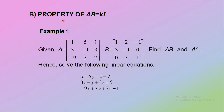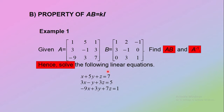You have learned how to solve systems of linear equations using the inverse matrix from the adjoint method. Now we are going to discuss using the inverse matrix obtained from the property AB equals kI. Look at Example 1: given matrix A and matrix B, find the matrix AB and A inverse, and solve the following linear equation.